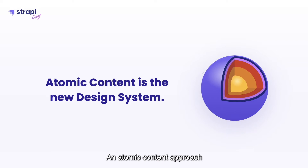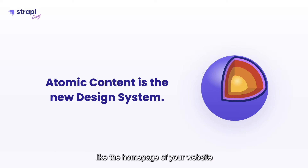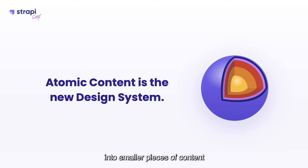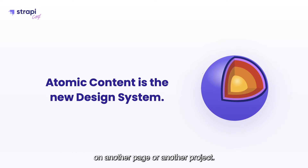An atomic content approach is when we break down a content structure — like the homepage of a website, for example — into smaller pieces of content that can be reused anywhere: on another page, on another project.